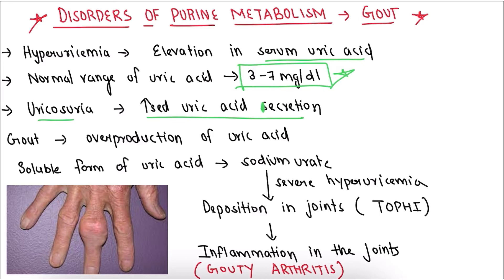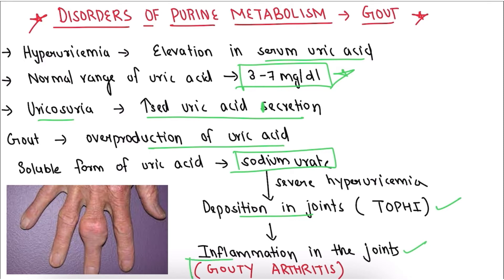What is gout? Gout is caused by overproduction of uric acid or decreased excretion of uric acid from the body. The soluble form of uric acid is sodium urate. In severe hyperuricemia, sodium urate gets deposited in the joints — this deposition is called tophi. Because of this deposition, there is inflammation in the joints, and this condition is called gouty arthritis.